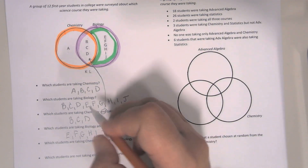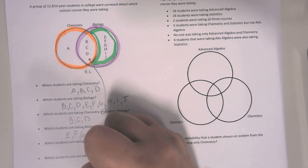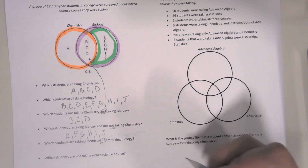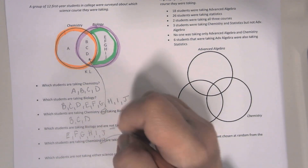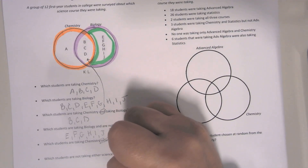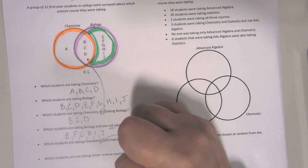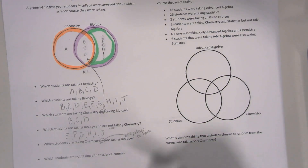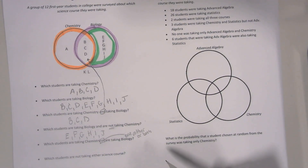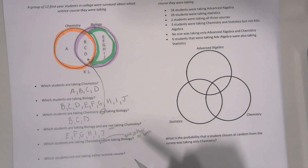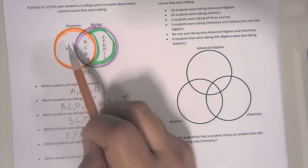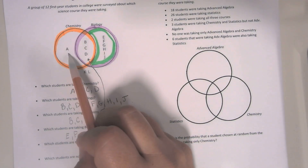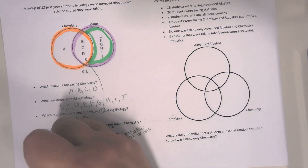Which students are taking chemistry or are taking biology? So this would mean one, the other, or both. So you could be taking just chemistry, you could be taking just biology, or you could be taking both at the same time. People that are just taking chemistry are A, so they count.